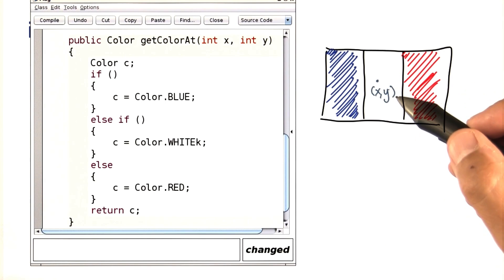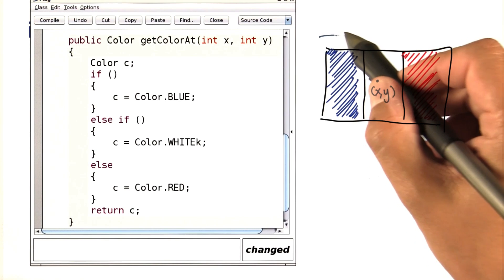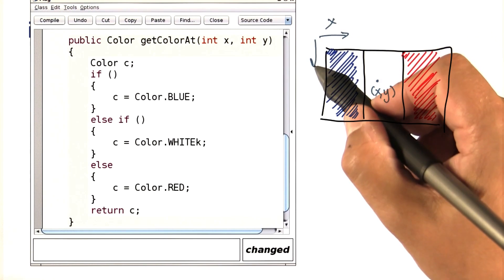Well, let's have a look how to do this. Again, we're given an arbitrary point on the flag. Let's remember that x moves this way, y moves this way.